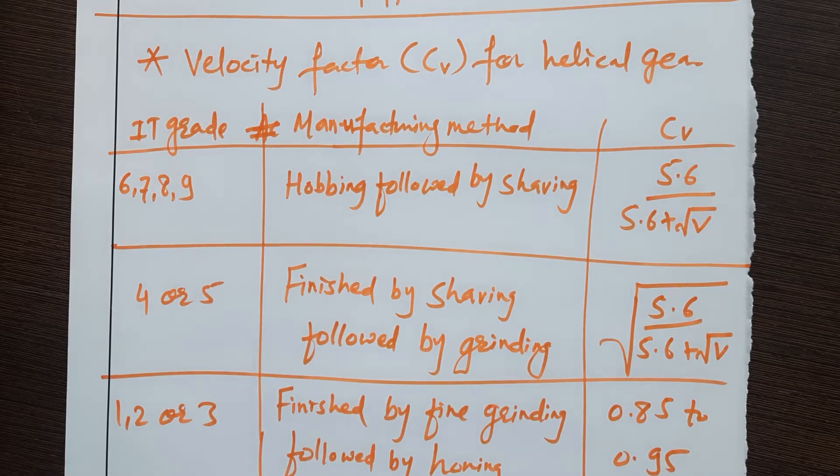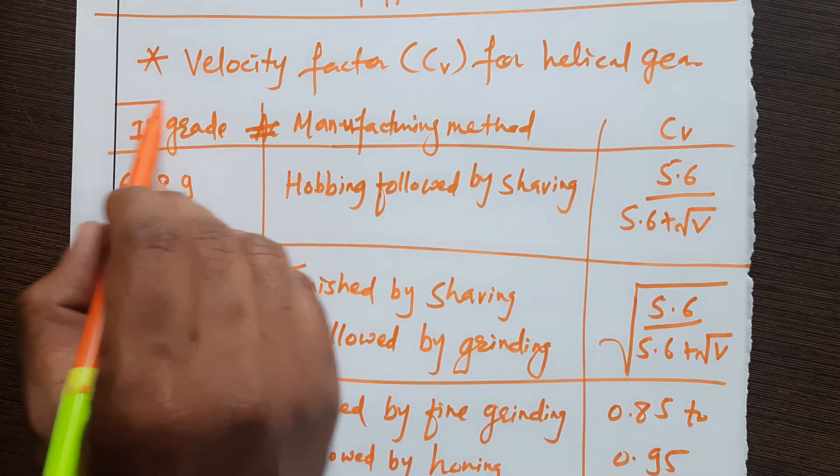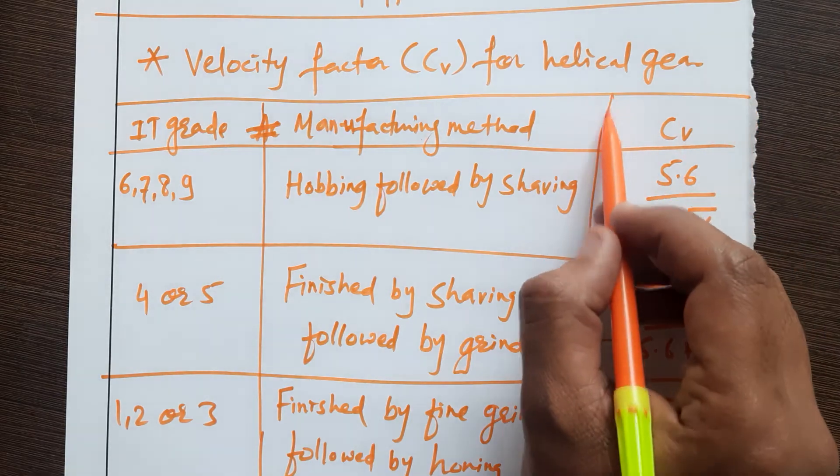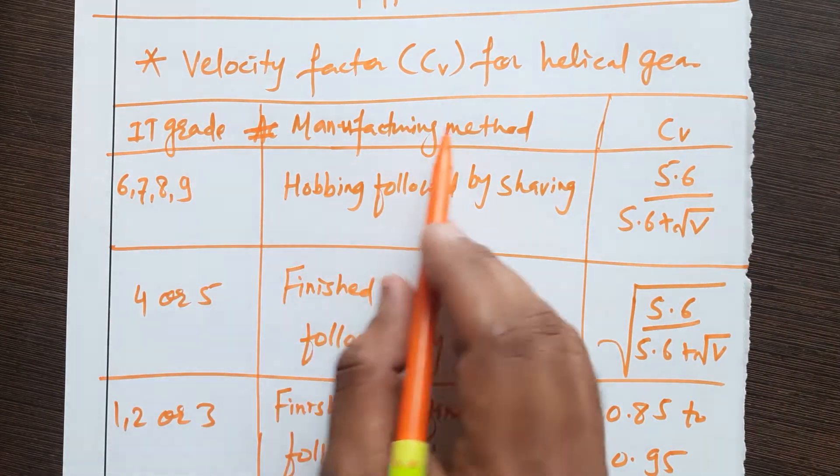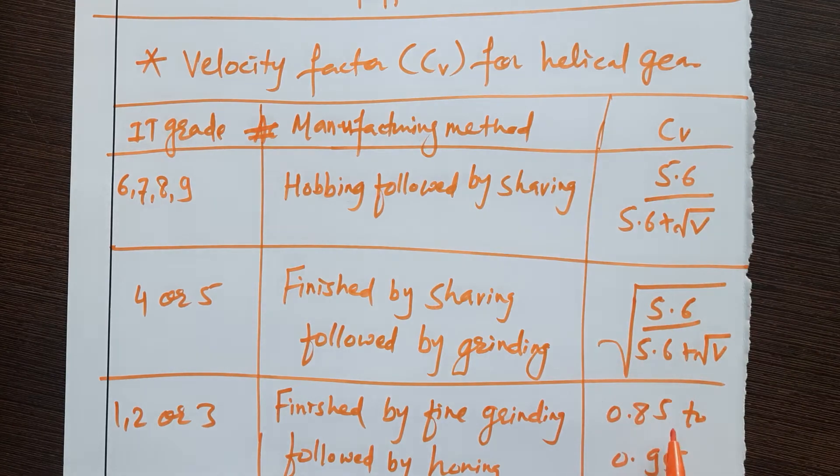I will go for the velocity vector for helical gear pair. There are different methods, different formulas to calculate velocity vector. According to IT grade and manufacturing method, you have to select the formula of velocity vector.